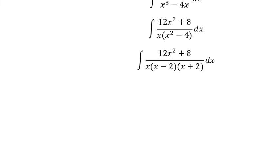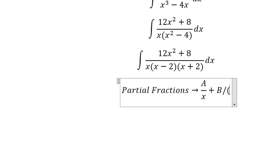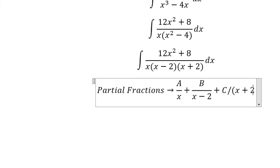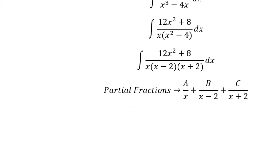Next we can use partial fractions. I will put A over x, plus B over x minus 2, plus C over x plus 2. And now we do common denominator.